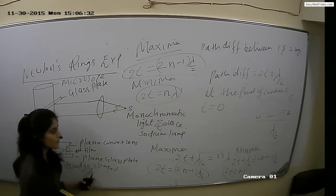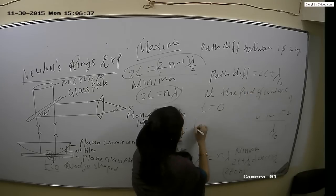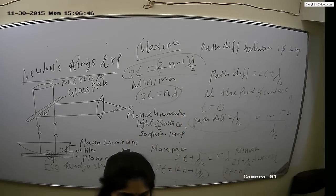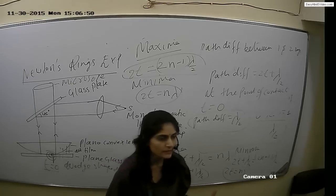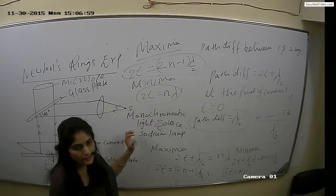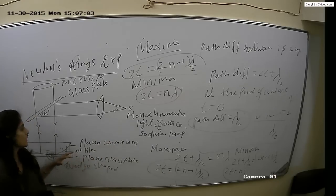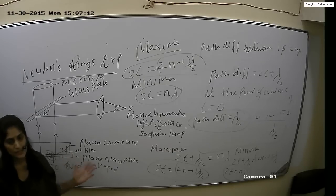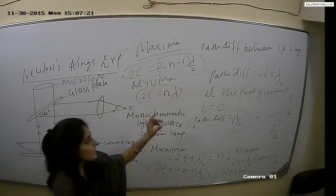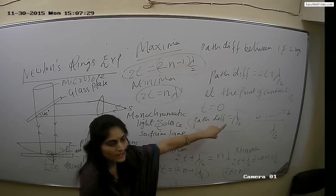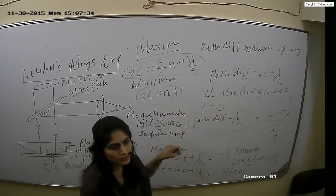At the point of contact, thickness T equals 0. When we substitute T = 0 into the path difference expression, we get path difference equal to λ/2. This λ/2 path difference is the condition for destructive interference, and at destructive interference we get darkness. That is why the center ring in Newton's ring experiment is dark. We get a bright center ring in reflected system only when dust particles come between the plano-convex lens and plain glass plate. When both surfaces are clean, the center ring is dark.